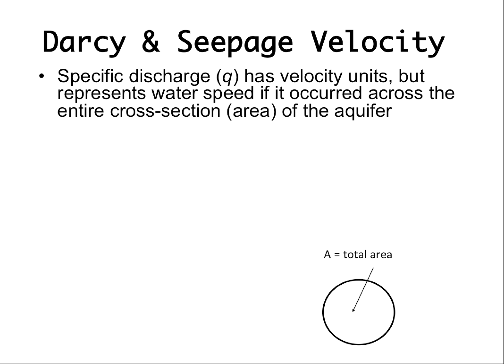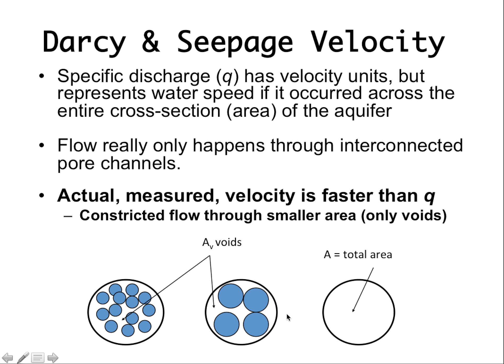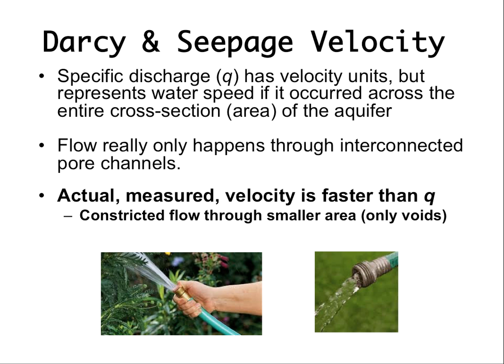Specific discharge has velocity units, but represents the water speed if it occurred across the entire cross-section or area of an aquifer. But flow really only happens through interconnected pore channels — through the void spaces — it can't go through the particles. So actual measured velocity of groundwater is usually faster than Q, because flow is constricted and has to move through only the voids. You can think of it like water coming out of a hose slowly, but when you put your thumb over it, it shoots out because you've constricted the flow.